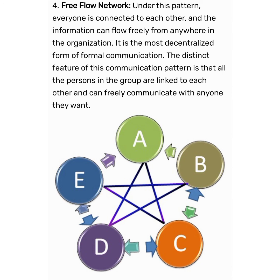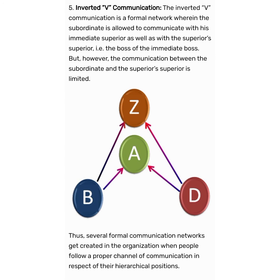The last type of formal communication network is Inverted V Network. In Inverted V Network, a subordinate is allowed to communicate with his immediate superior as well as his superior's superior. In the latter case, the subject matter of the communication is prescribed. The Inverted V communication is a formal network wherein the subordinate can communicate with the boss of the immediate boss. However, the communication between the subordinate and the superior's superior is limited.